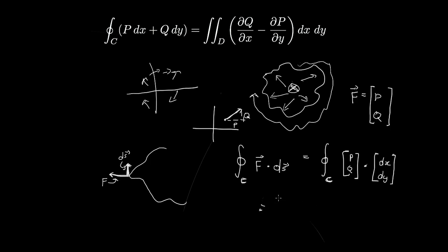So actually doing the dot product, I get the integral over the closed loop of P dot dx, I mean sorry, P multiplied by dx, and then I add that to Q times dy.